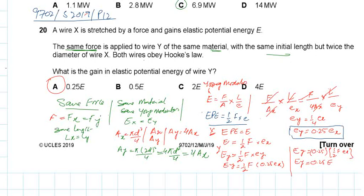9702 May, June 2019, paper 1, variant 2, question number 20.